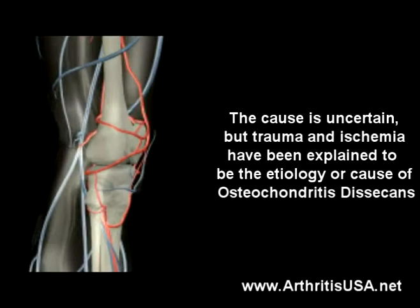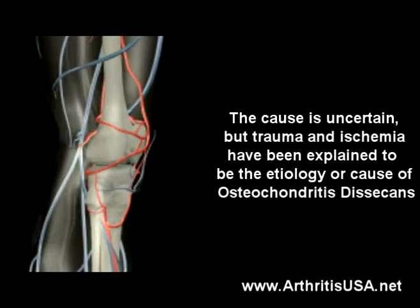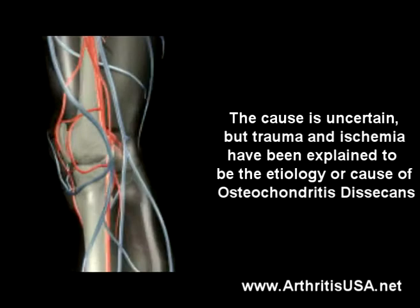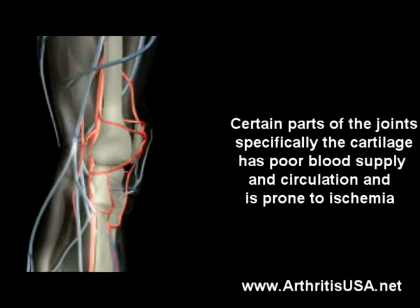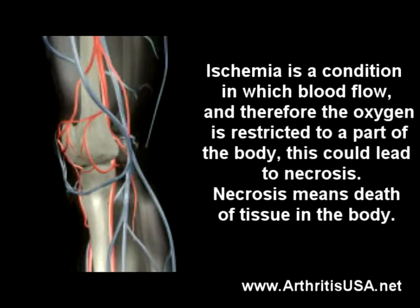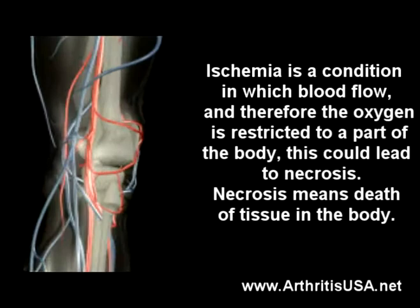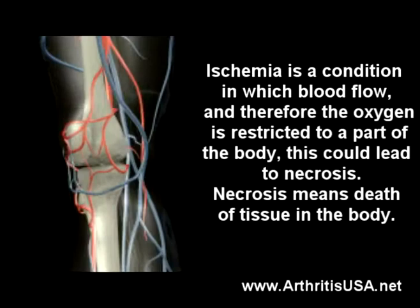The cause is uncertain, but trauma and ischemia have been proposed as the etiology of osteochondrosis desiccans. Certain parts of the joints, specifically the cartilage, have a poor blood supply and are prone to ischemia. Ischemia is a condition in which blood flow, and therefore oxygen, is restricted to part of the body. This can lead to necrosis, which means the death of tissue inside the body.